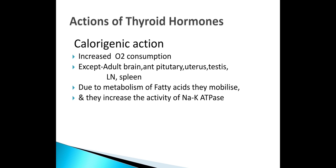Thyroid hormones produced in excess can increase the metabolic rate by 60 to 700%. The calorogenic action is by increasing oxygen consumption. Except on these organs, there is no increased metabolic activity. This is mainly due to metabolism of fatty acids, mobilization, and the increased activity of the sodium-potassium pump.